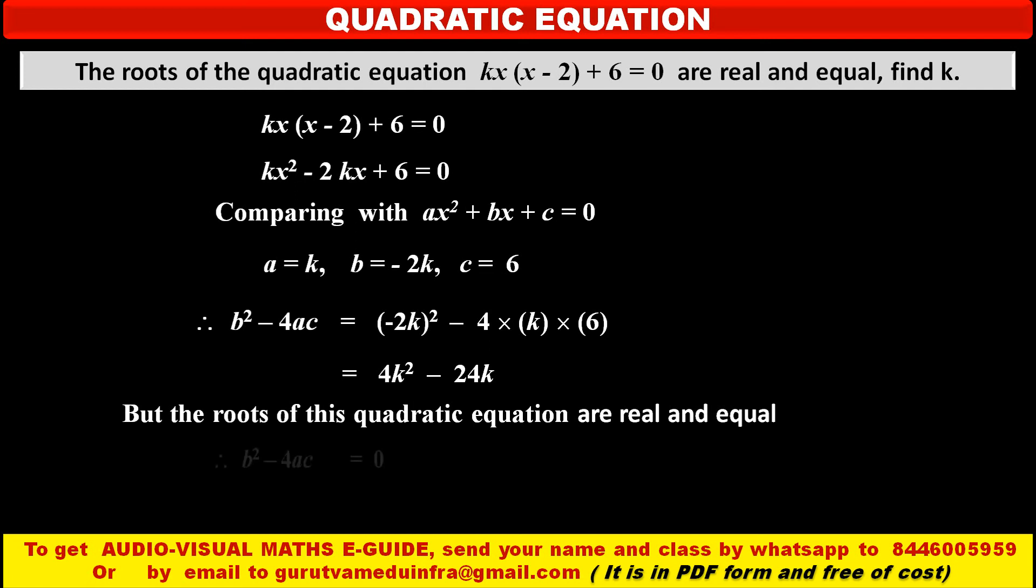That means b square minus 4ac is equal to 0. But we have value of this discriminant. So equating this value to 0, we get 4k square minus 24k, value of discriminant is equal to 0.